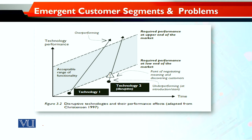Dekhiye, jo Y-axis hai usme technology performance batayi gayi hai aur X-axis mein simply time — yani waqt ke mukhtalif years. Yeh jo range aap dekh rahe hain — yeh performance band hai. Jo nayi technology aa rahi hai, shuru mein technology number one ki ek required performance hai at the low end of the market — market mein is technology se kya kya expectations thi. Yahan dekhen, yeh below expectation kam hai, phir waqt ke saath saath improve hua, aur phir ek waqt aisa aaya jab usne over-perform kiya.